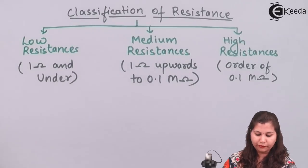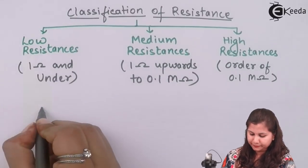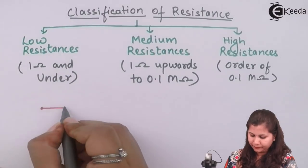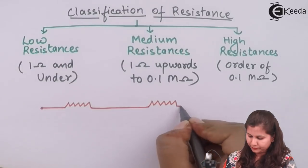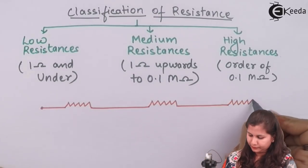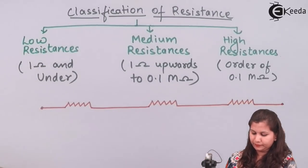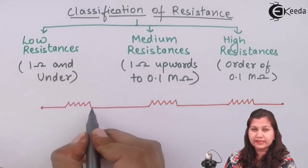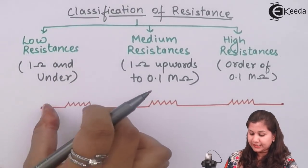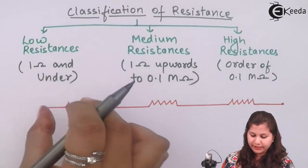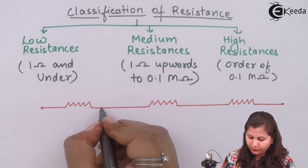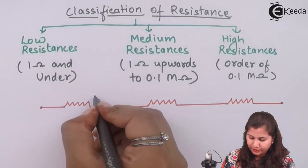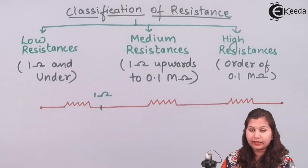If we draw a figure for it, this is the symbol used to represent resistance. Low resistance is the resistance whose value is from zero ohm to one ohm.